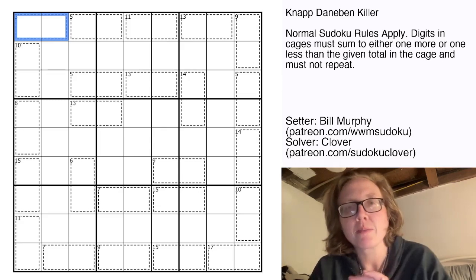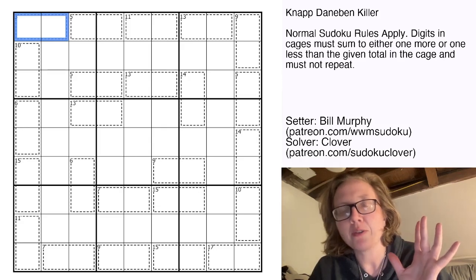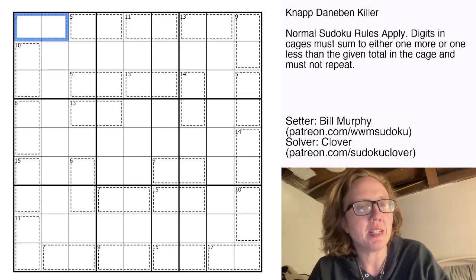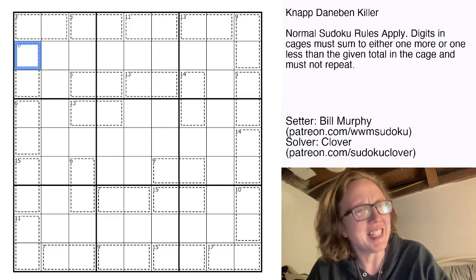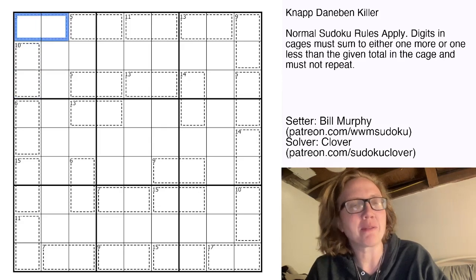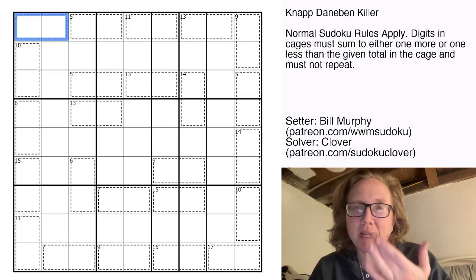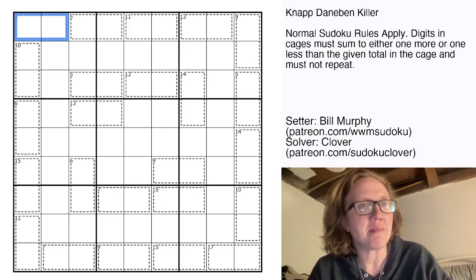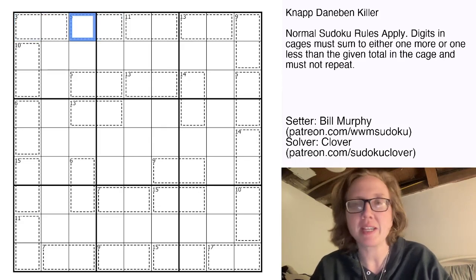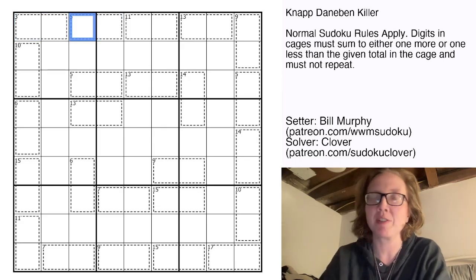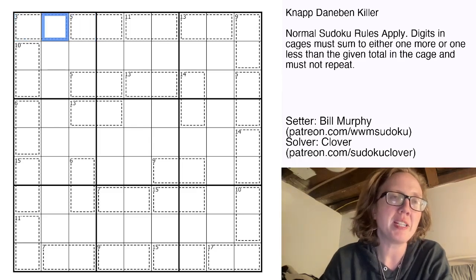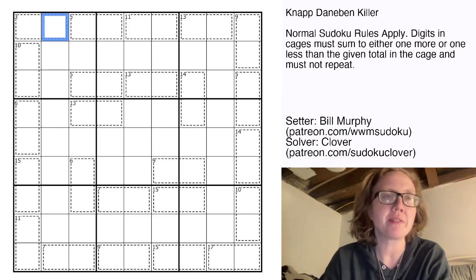In this particular puzzle, Knapp Daneben refers to the German phrase meaning that it's off by one. It definitely refers to Sudoku puzzles in which clues are off by one. In this case, it means that the total written in each killer cage is off by one from what's actually shown in the clue.